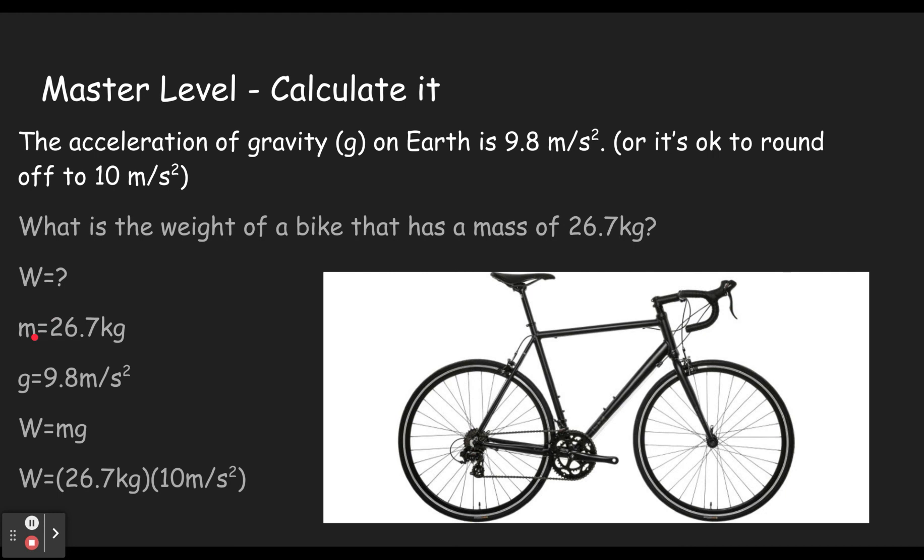And when we multiply that, multiply by 10 just moves the decimal point. So we just multiply those together and we get W equals 267. If you use 9.8, it'd be a little bit less. So you could put in a little bit less, you'd be fine also.